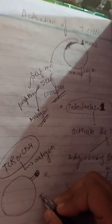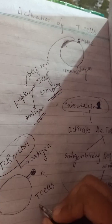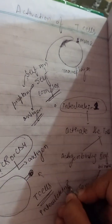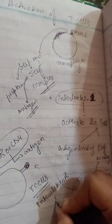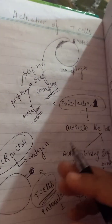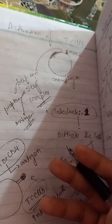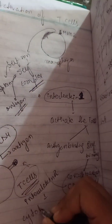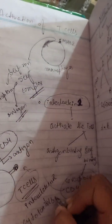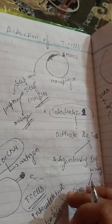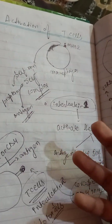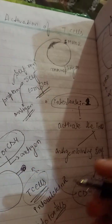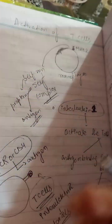After reading the antigen, the T cell will release one more chemical — interleukin-2. After interleukin-2, the T cells will multiply, and T cells will activate the cytotoxic cells. The T cells will multiply more and more — if two T cells are there they become four — so proliferation of T cells will occur.